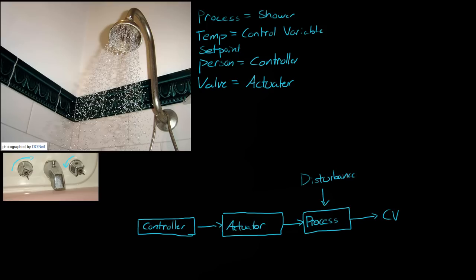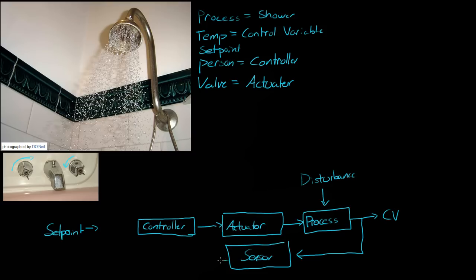Why are we as controllers changing the actuator? We're changing it due to the set point. The set point is affecting the controller. But why is the set point affecting the controller? Because we are sensing the temperature of the water — we have a sensor. Our skin is sensing the temperature of the water, and combined with the set point, it is sending some error E to the controller.